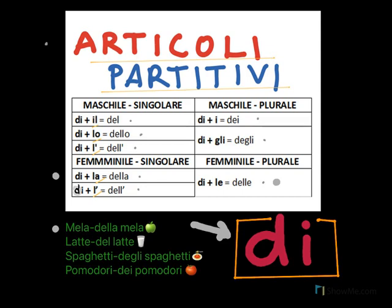The next one is 'latte.' What is the gender? The gender is masculine — 'il latte.' It starts with a single consonant, so it will be 'di' plus 'il,' which becomes 'del latte' — some milk.